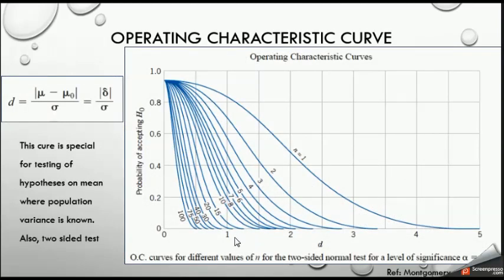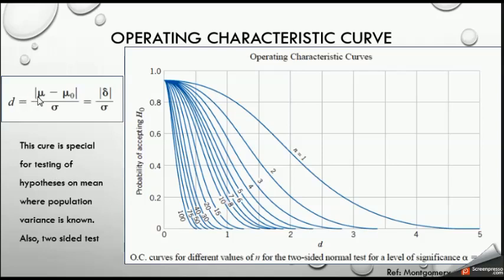This is a sample Operating Characteristic Curve — these are special curves for different values of n for a two-sided normal test. We have separate curves for one-sided tests. This is for a normal test, meaning we know the variance of the population. This is only for the significance level alpha equal to 5%; we also have different curves if alpha is 1% or other values. On the x-axis we have d, and on the y-axis we have the probability of accepting H-naught, which is beta. d is the absolute value of the difference between mu and mu-naught, divided by sigma.